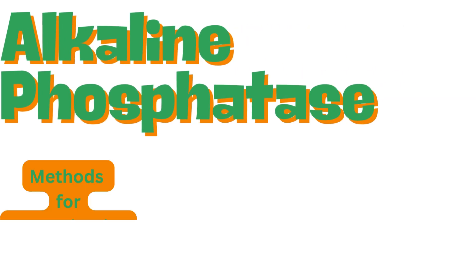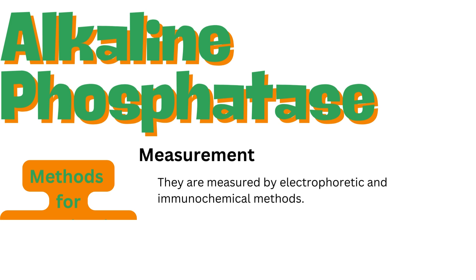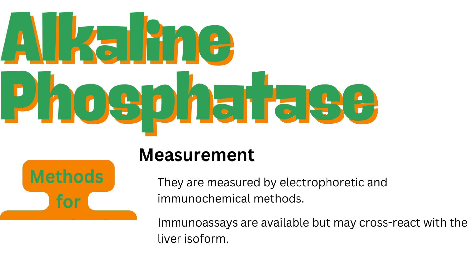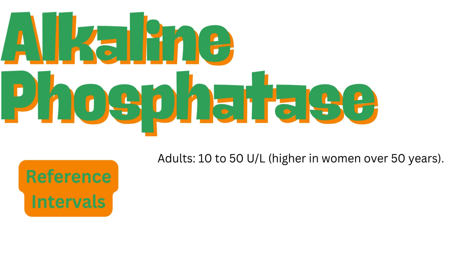Methods for determination: it is challenging to separate bone and liver ALP due to their structural similarity. They are measured by electrophoretic and immunochemical methods. Immunoassays are available but may cross-react with the liver isoform. BAP is stable at minus 20 degrees Celsius for up to 2 years. Reference intervals for adults: 10 to 50 units per liter, higher in women over 50 years. Children aged 4 to 15 years: 54 to 369 units per liter.